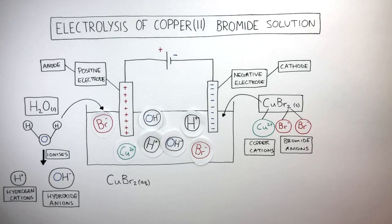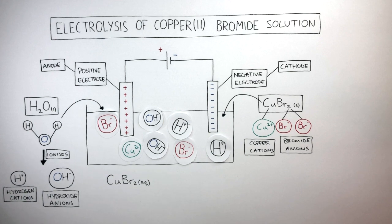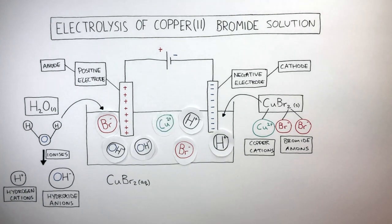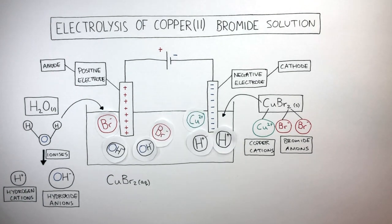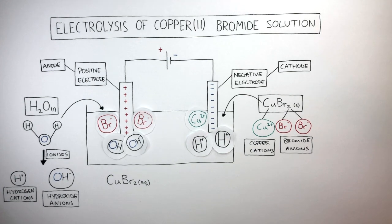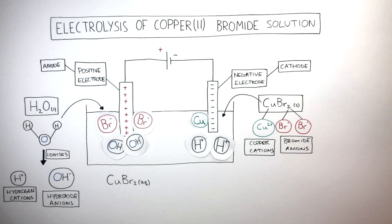Let's now focus on what happens to the ions in the electrolyte. The ions are free to move in the electrolyte. The positive cations are attracted to the cathode and the negative anions are attracted to the anode — opposites attract, the same charges repel. Copper forms at the cathode, where Cu²⁺ becomes Cu copper atoms. The copper cations form copper atoms at the cathode.